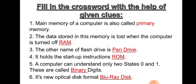Now, fifth one. A computer can understand only two states, 0 and 1. These are called dash digits. Again, from left to right, number five, write down. Fill the cross puzzle. It's binary. B, I, N, A, R, Y.